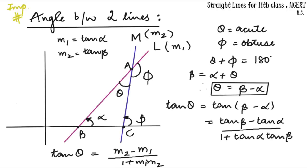Moving on, the third and most important part of this portion is the angle between two lines — how to find the angle between two lines using their slopes. We have two lines with an acute angle theta and an obtuse angle phi between them.